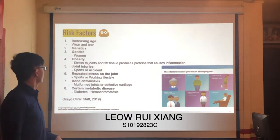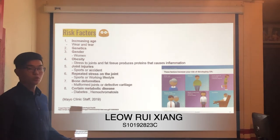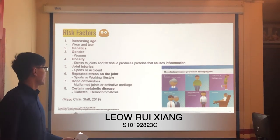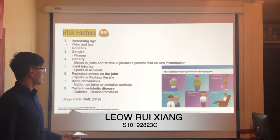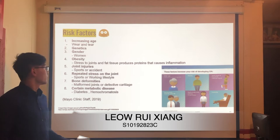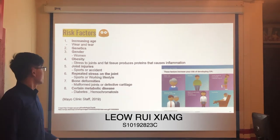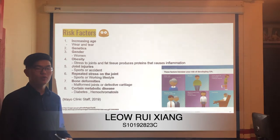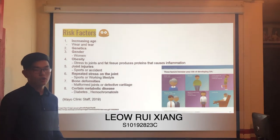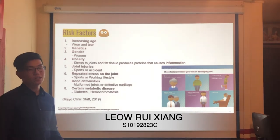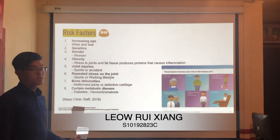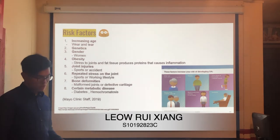Fifth, joint injuries can be due to sports or accidents, and repeated stress on the joint from sports or working lifestyle. Seventh, bone deformities may be due to malformed joints or defective cartilage. Lastly, certain metabolic diseases such as diabetes.